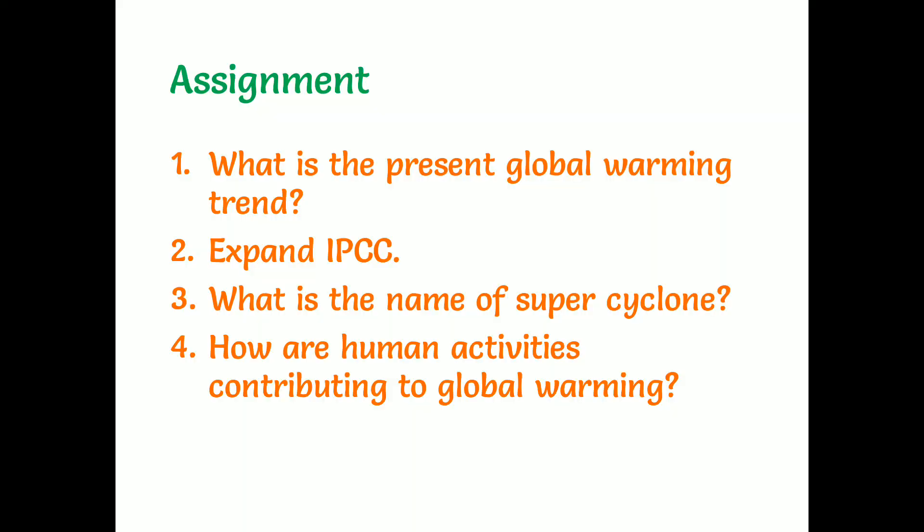We have come to the end of this lesson. Here is your assignment: What is the present global warming trend? Expand IPCC. What is the name of the super cyclone? How are human activities contributing to global warming? The fourth question is a general question — read through the textbook to find the answer about what activities we are doing and how we are causing global warming. Write the answers and forward them to me. See you in the next video. Thank you, children.